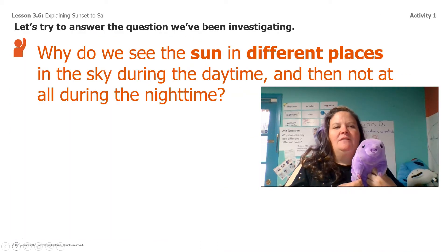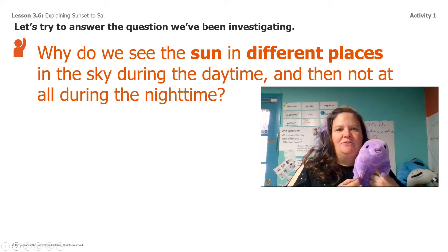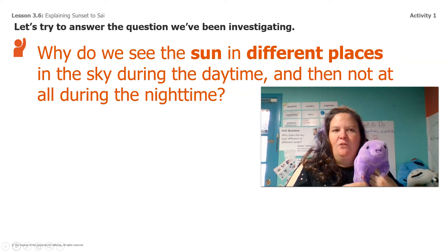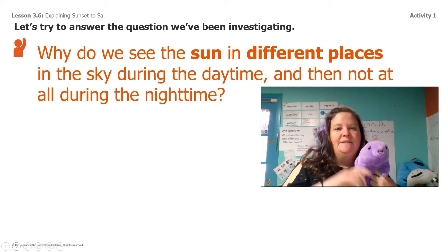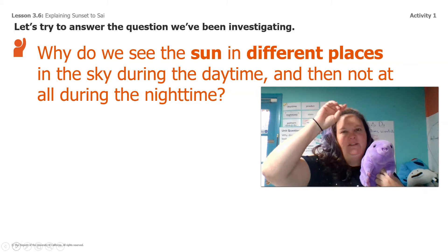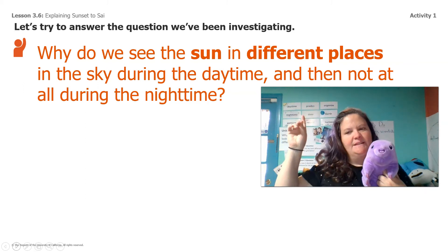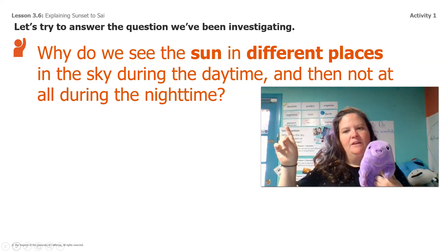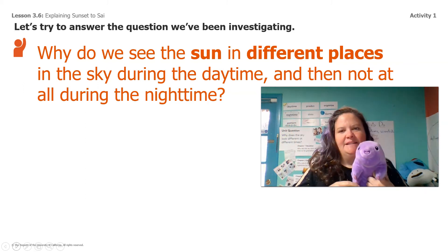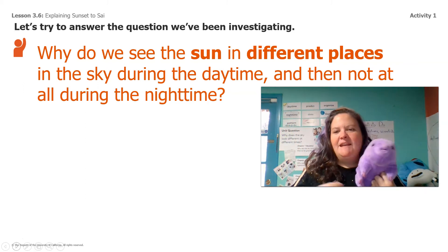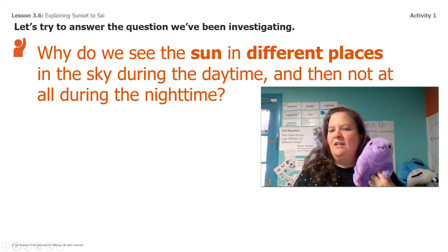So let's try to answer the question we've been investigating so far: why do we see the sun in different places in the sky during the daytime, and then not at all at nighttime?